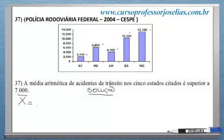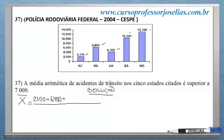x barra será a média aritmética. Você vai somar todos os dados e dividir pelo número de dados. Então: Acre, 2.100, mais Mato Grosso do Sul, 6.400, mais Amazonas, 4.100.